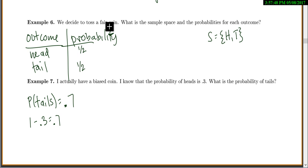Now let's say we decide to toss a fair coin. What is the sample space and probabilities for each outcome? Our outcomes are heads and tails. Each probability is one half because they're equally likely.